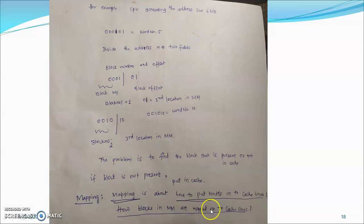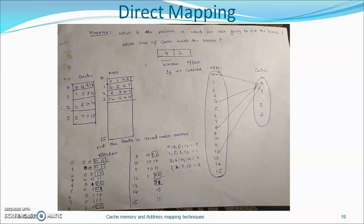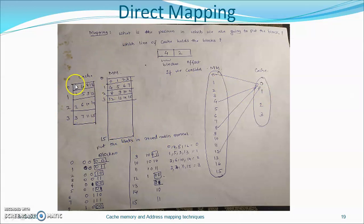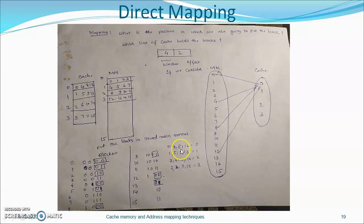With 6-bit addresses, the first four bits represent the block number and the last two bits represent the offset. Multiple main memory blocks are mapped onto a single cache line — a many-to-one mapping. Blocks are placed in round-robin manner. For example, blocks 0, 4, 8, and 12 all map to cache line 0; blocks 1, 5, 9, and 13 map to line 1; blocks 2, 6, 10, and 14 map to line 2; and blocks 3, 7, 11, and 15 map to line 3.